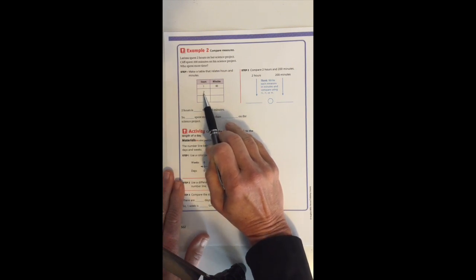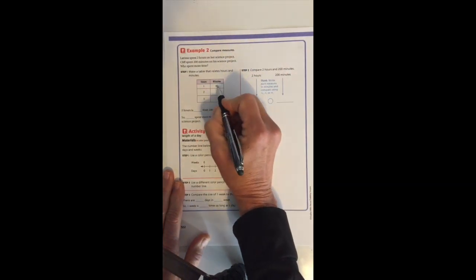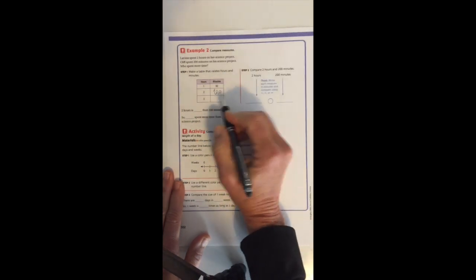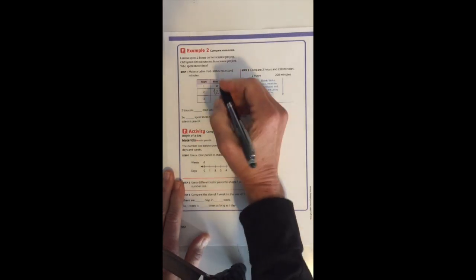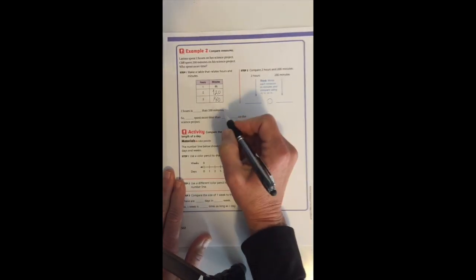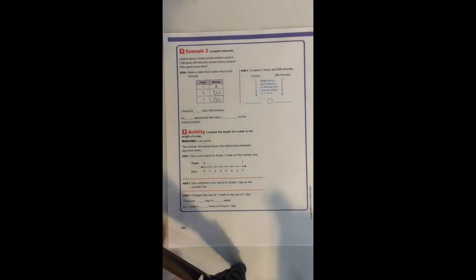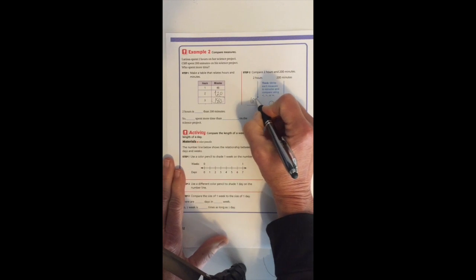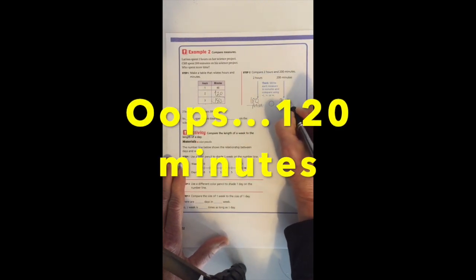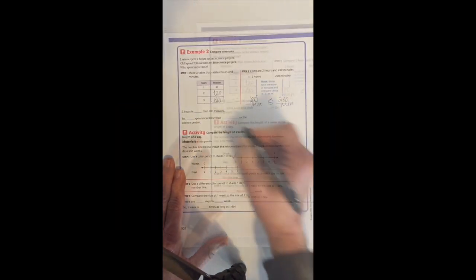We know that one hour is 60 minutes. So to find out how many minutes are in two hours, we would double that quantity. If one hour is 60 minutes, two hours would be twice that, which would be 120 minutes. Three hours would be three times that, which would be 180 minutes. Now we can compare minutes to minutes.